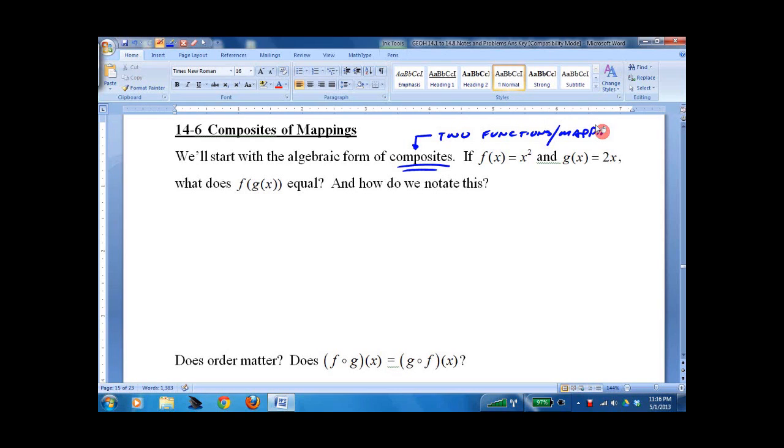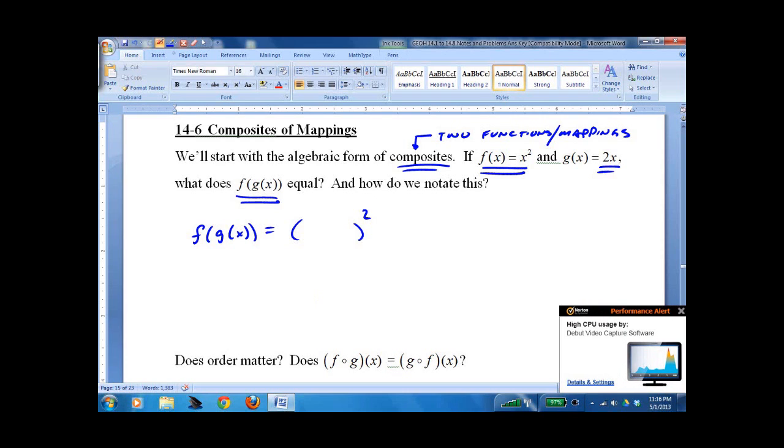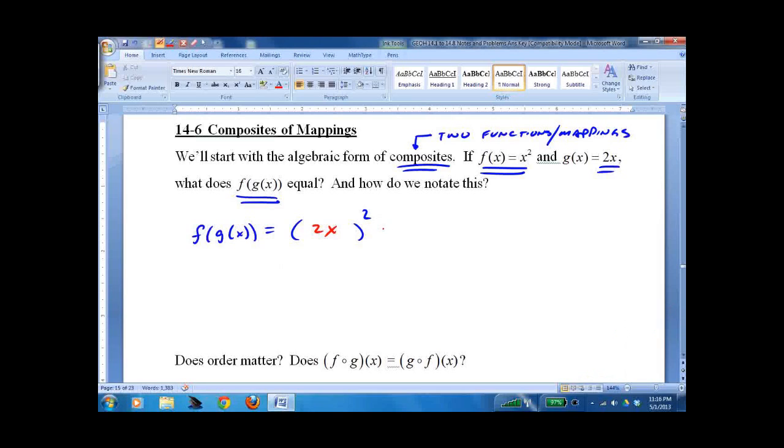You've seen some version of this in Algebra 1 or Algebra 2. If I write f of g of x, I'm saying take f of x, which in this case is x squared, and take g of x, which in this case is 2x, and shove it in there. Then keep going to see what you get. You have to distribute the squared, so you'd get 4x squared.